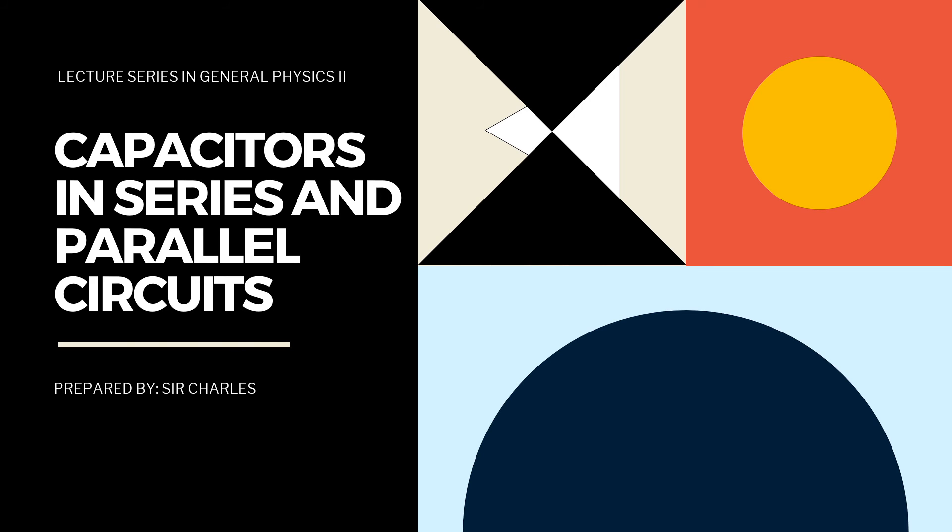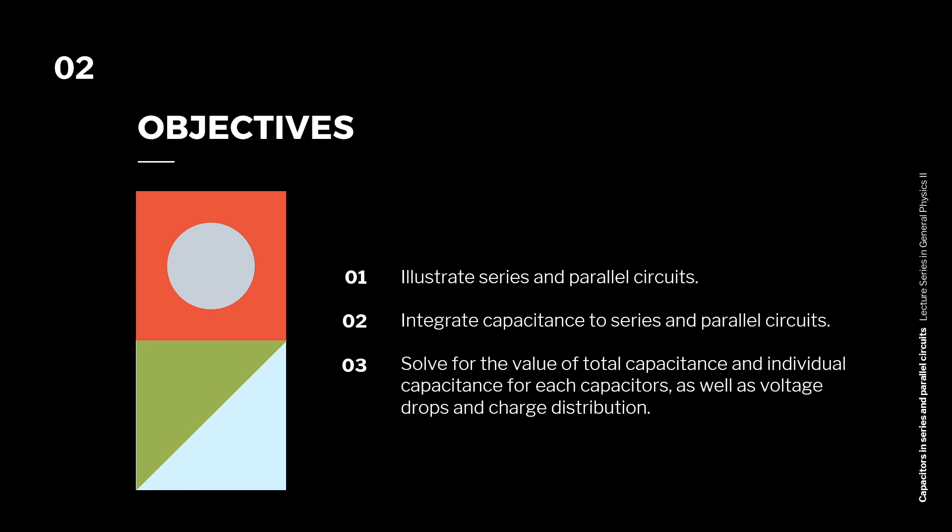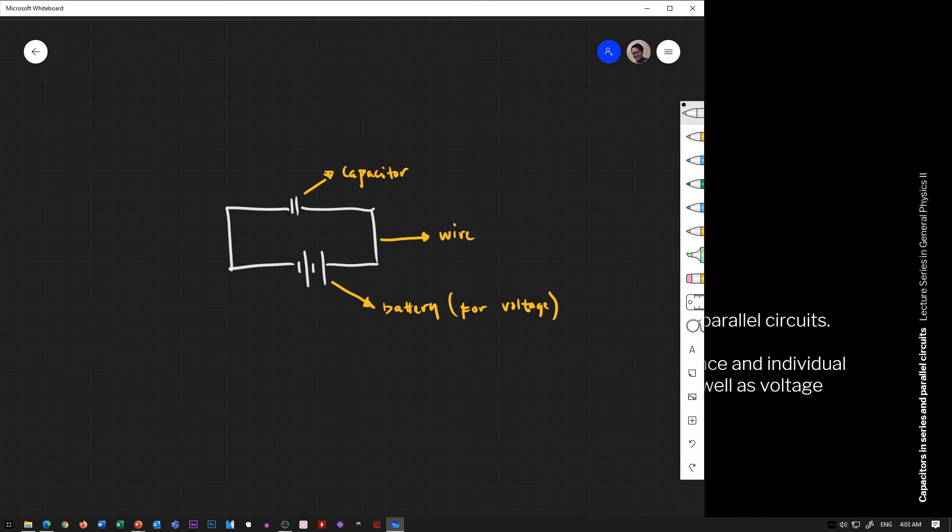The topics for this series and parallel circuits. The objectives are: first, to learn how to illustrate the structure of series and parallel circuits; then to integrate capacitance from the previous topic into series and parallel circuits; and lastly to compute — to find the total capacitance, individual capacitance, voltage drops, and charge distributions.